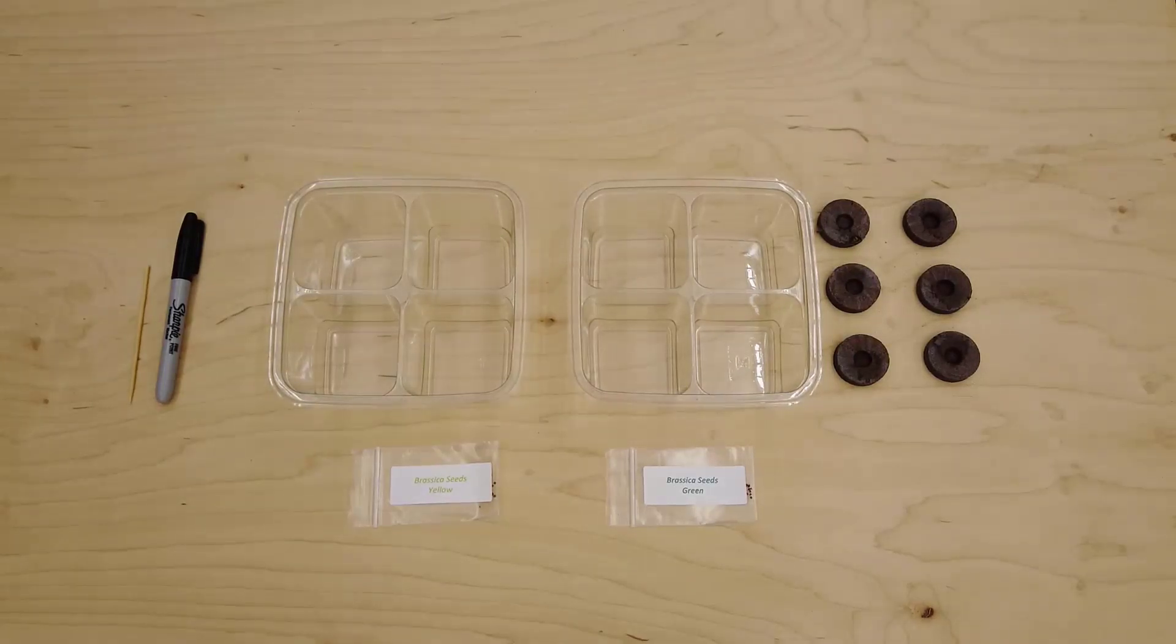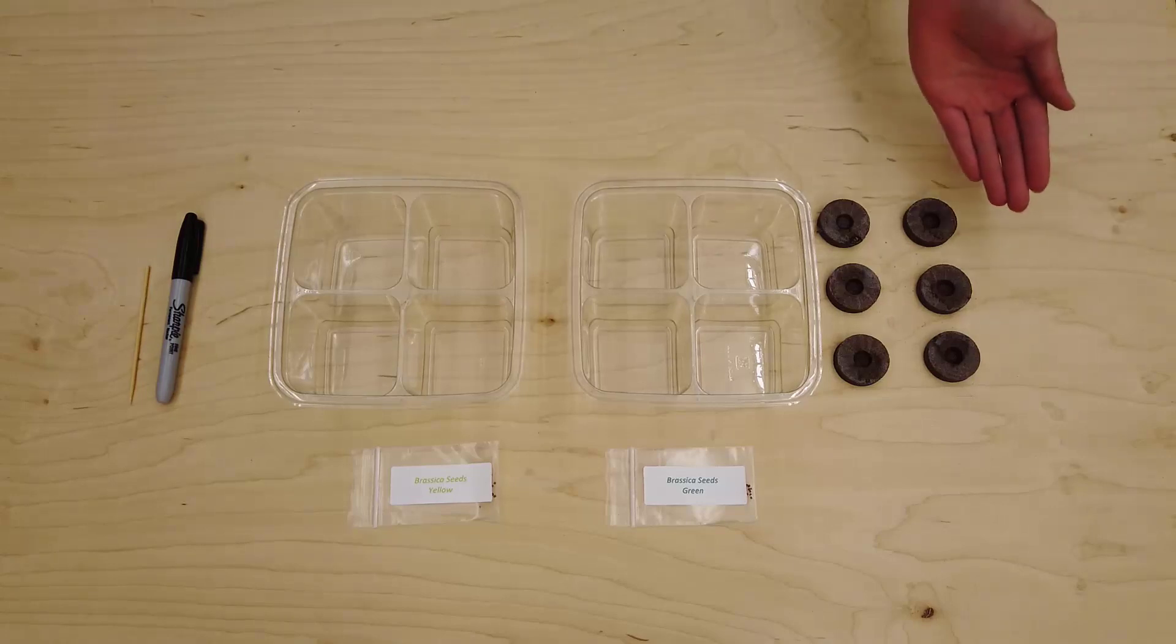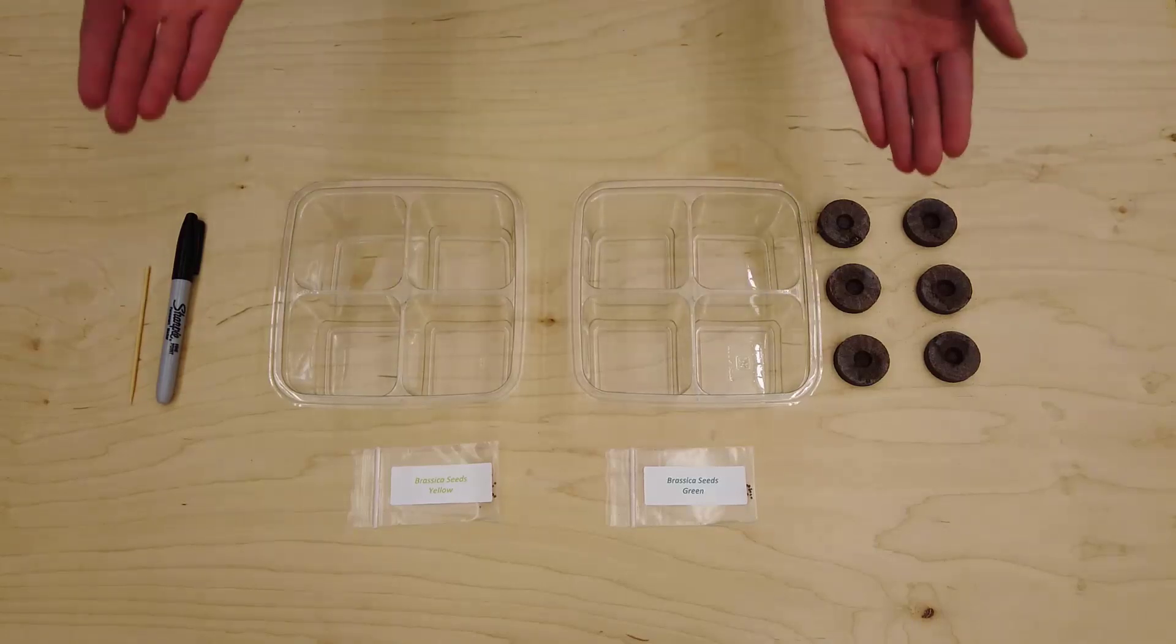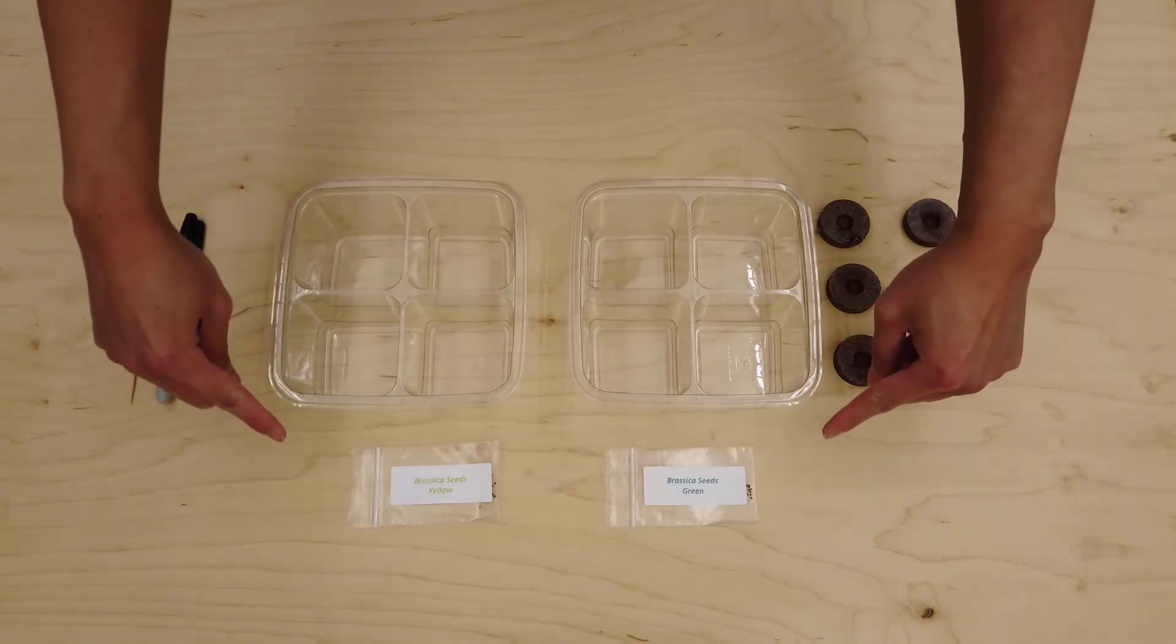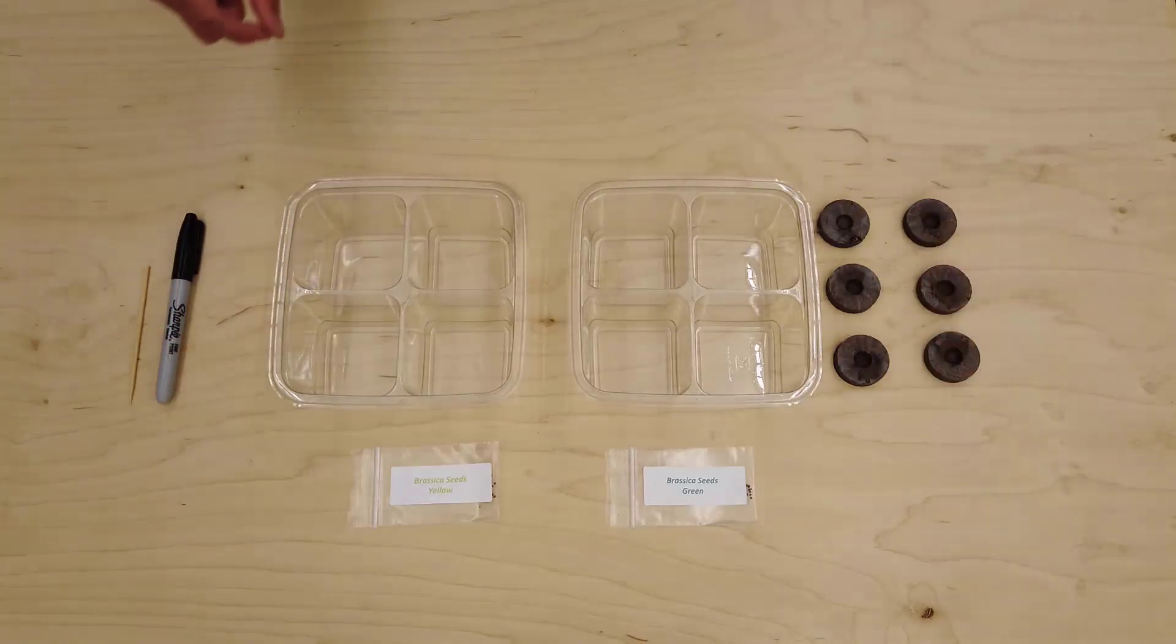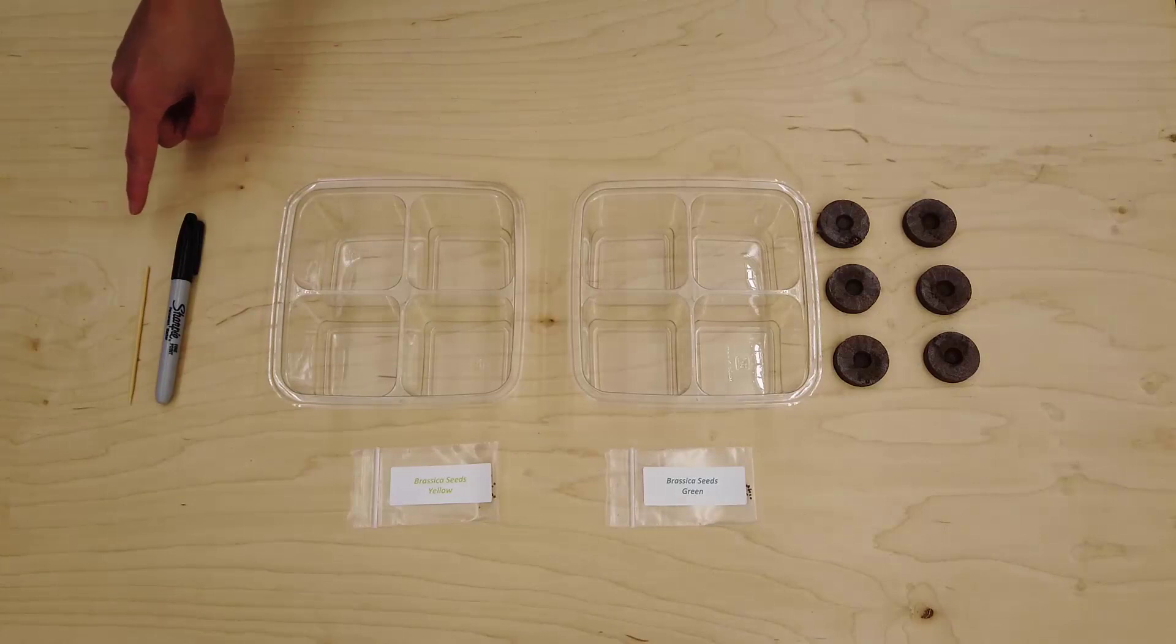In the Lab 4 kit you should find instructions as well as 6 peat pellets, 2 deli trays, 2 packets of seeds, and a wooden skewer. You will also need a Sharpie, water, and a measuring cup.